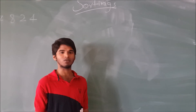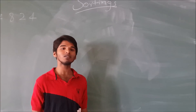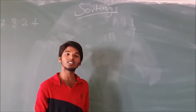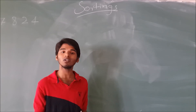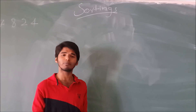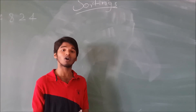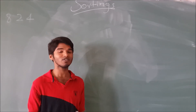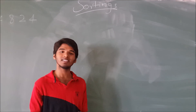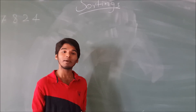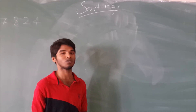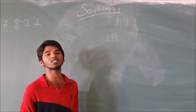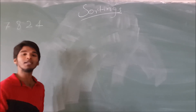What do I mean by type of the input? The type of input is whether the elements we are considering for sorting are already sorted, partially sorted, or need to be sorted. And what do I mean by size of the input? It's nothing but the number of elements that we are considering for sorting. So let's start our discussion with bubble sort.